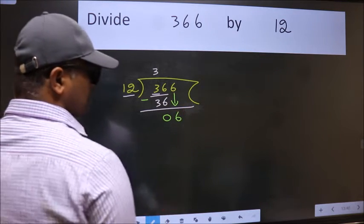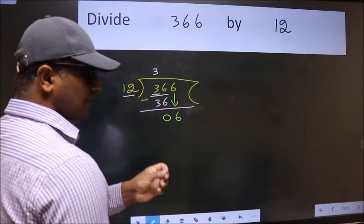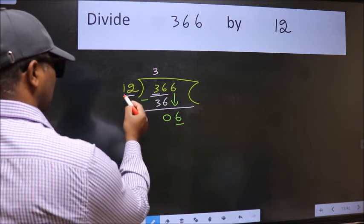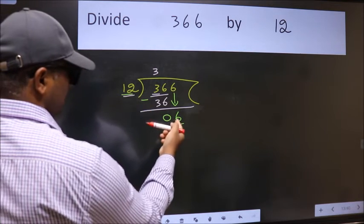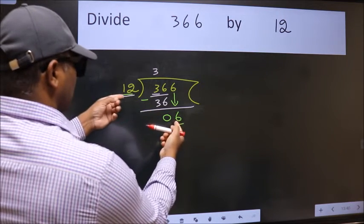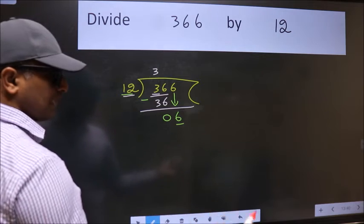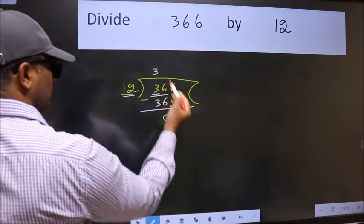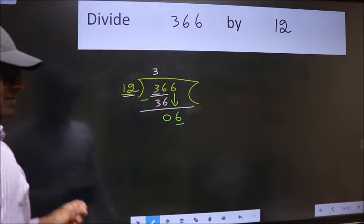After this step, the mistake happens. And the mistake is this: here we have 6, and here 12. 6 is smaller than 12.